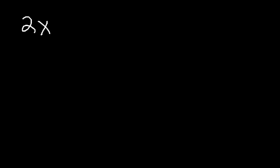In this video we're going to focus on factoring trinomials with a leading coefficient that is not 1. So here's an example. Let's say if you have this expression 2x squared minus 5x minus 3. How would you factor this expression?